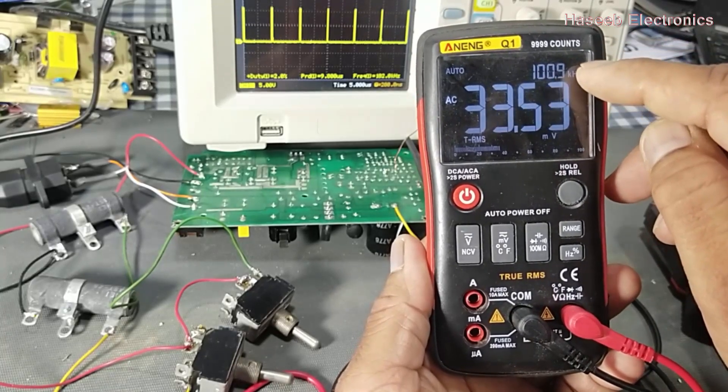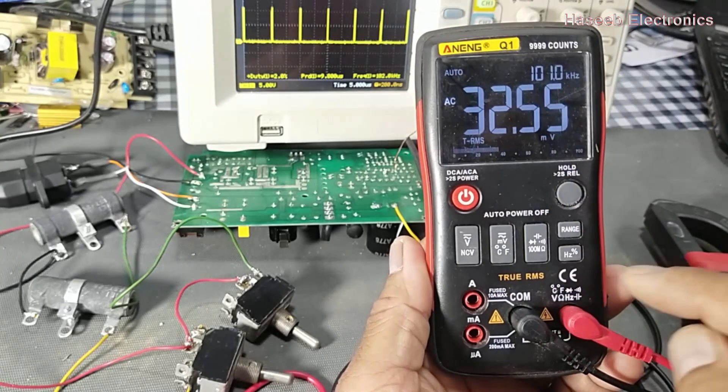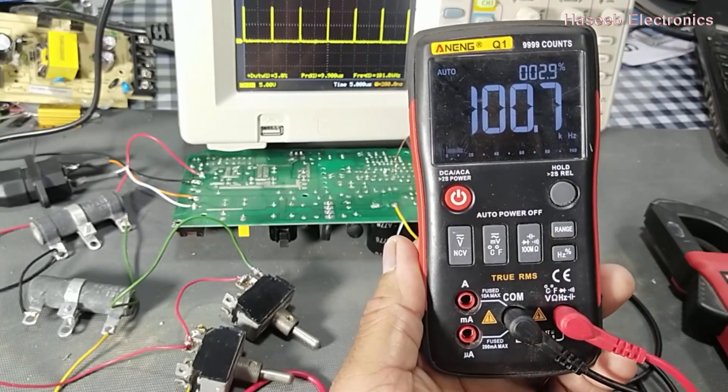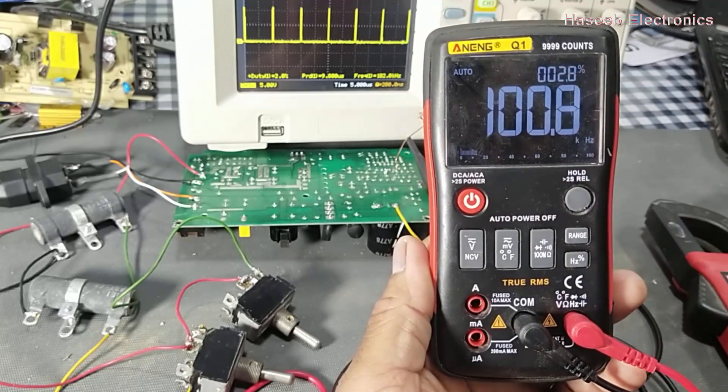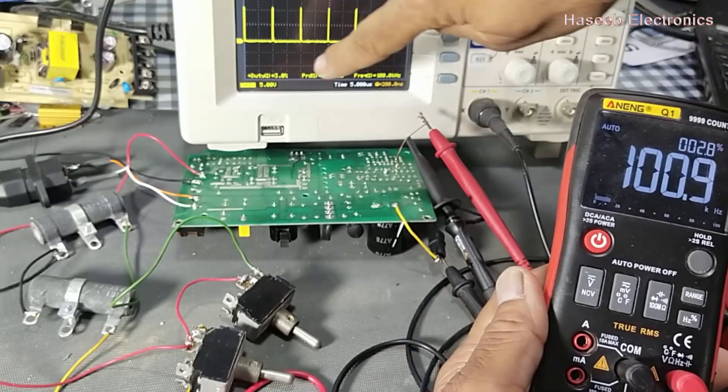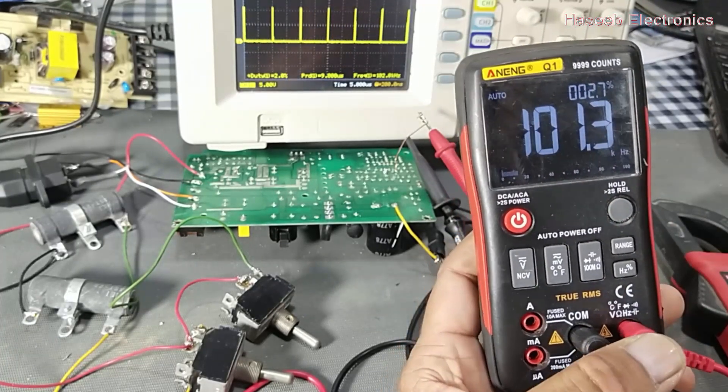It is giving 100 kilohertz and 32 millivolts. Now we will press the hertz function - 100.7 kilohertz, 2.9 percent duty cycle. That's nice. The same - it is giving 2.8 percent. So we can test in this way very easily.